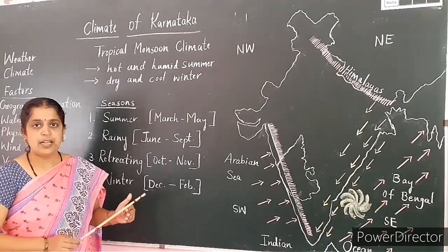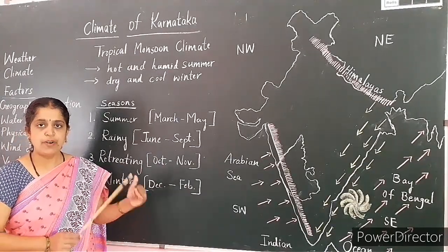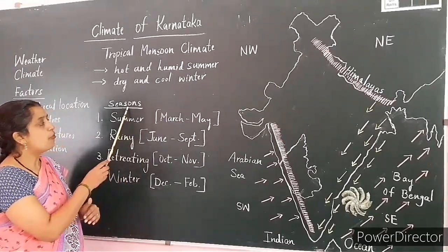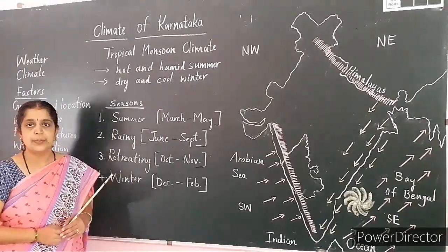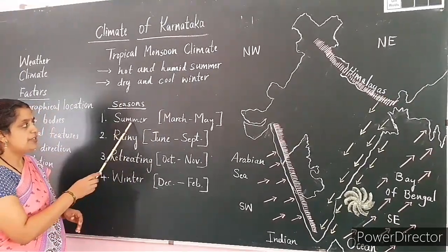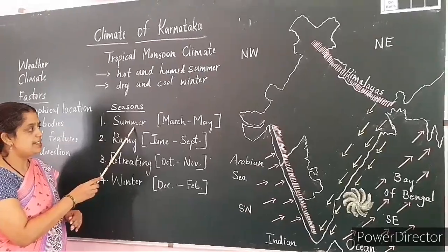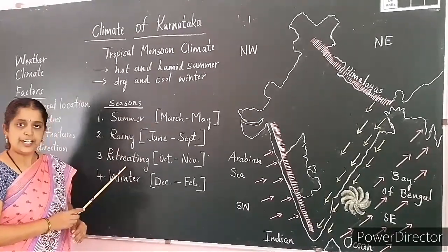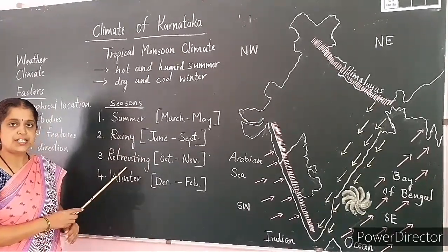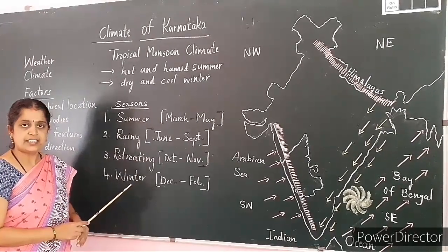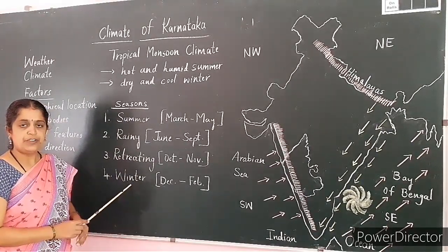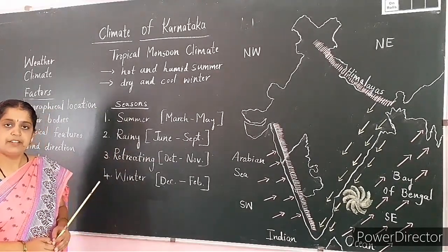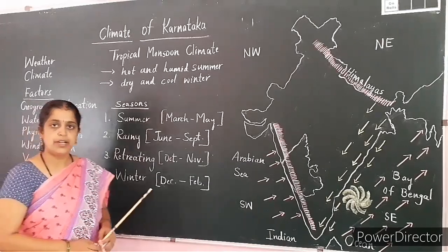By studying the climate over one year, we divide the climate into four seasons: the first is summer season, next is rainy season, then retreating monsoon season, and finally winter season. Let me discuss each one by one.